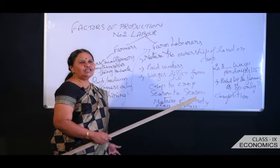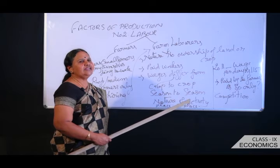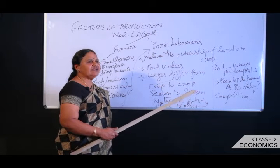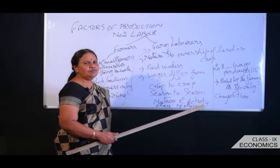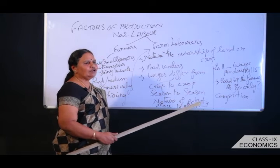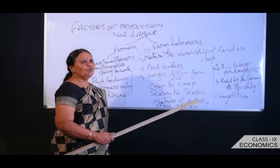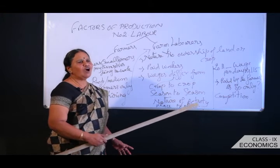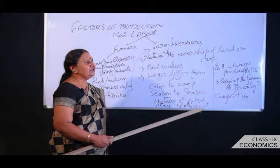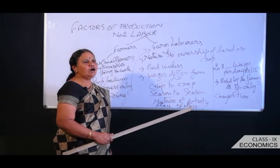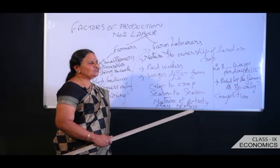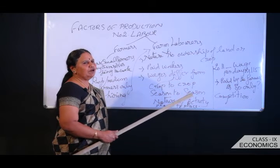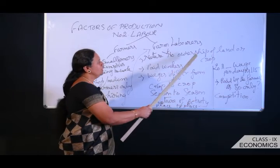Dala was ready to borrow money from a moneylender at a high rate of interest. Ramkali also narrates her sad story of borrowing money that is very difficult to repay. Both Dala and Ramkali are pushed into a debt trap — an awkward situation from which the workers are unable to come out. This is the situation we see in villages like Palampur regarding farm laborers.